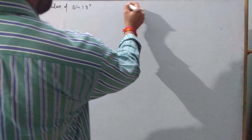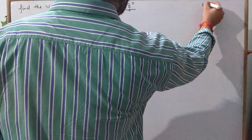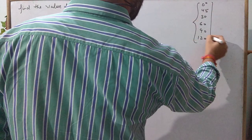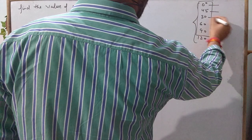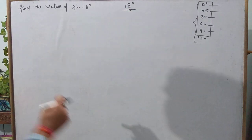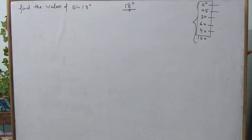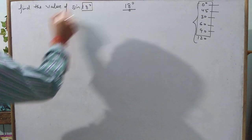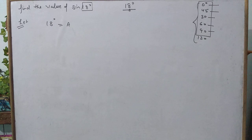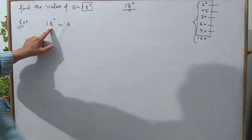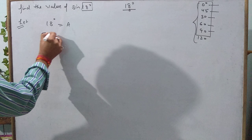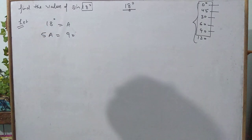18° is not a standard angle. Standard angles are 0°, 30°, 45°, 60°, 90°, 120° — whose values in terms of sin, cos, tan and other ratios we know. But 18 is not standard, so we need a procedure. Let a = 18°. We find what multiplier brings 18° close to a standard angle. Multiplying by 5 gives 5a = 90°.